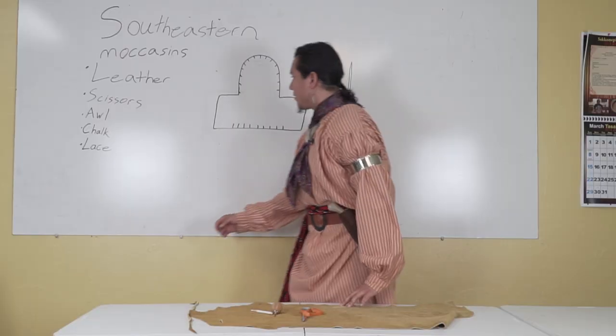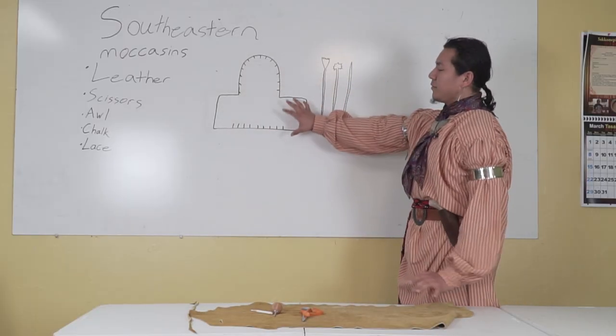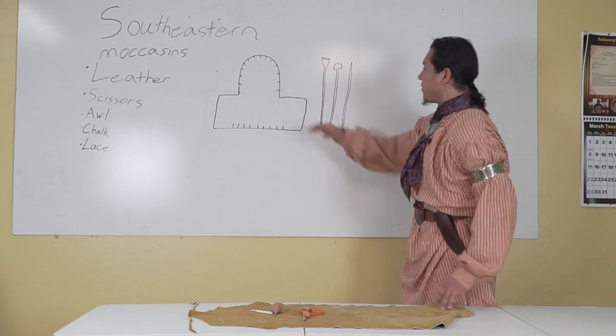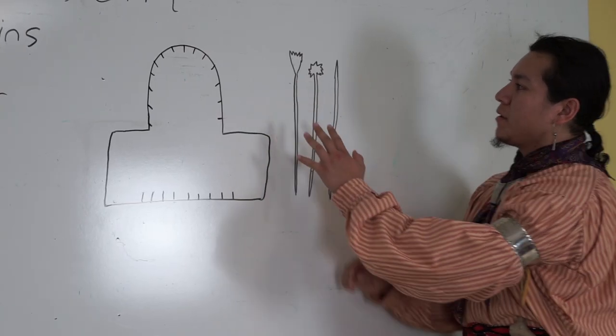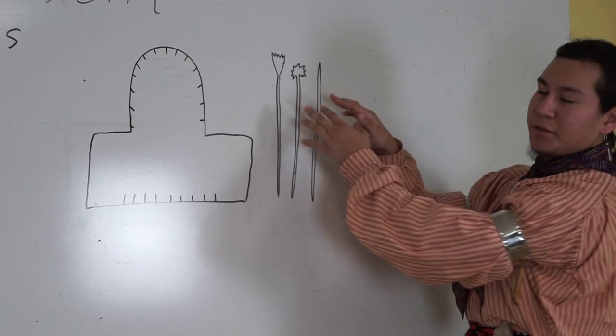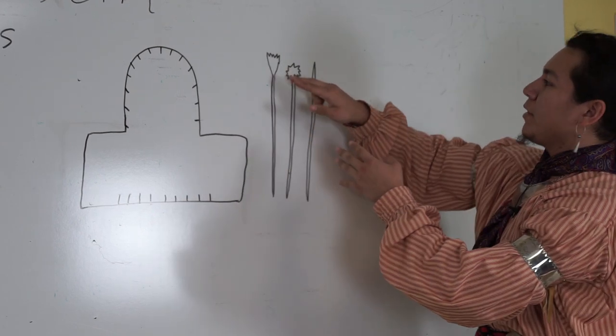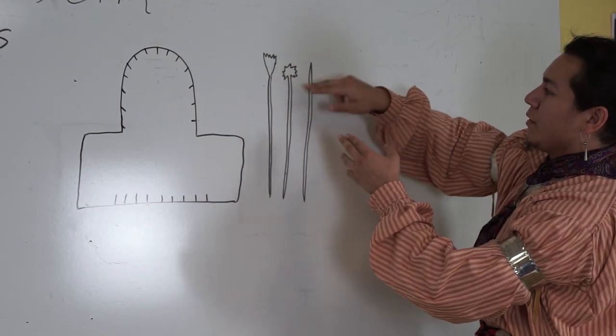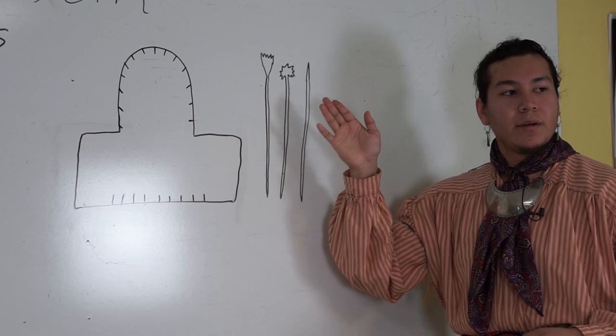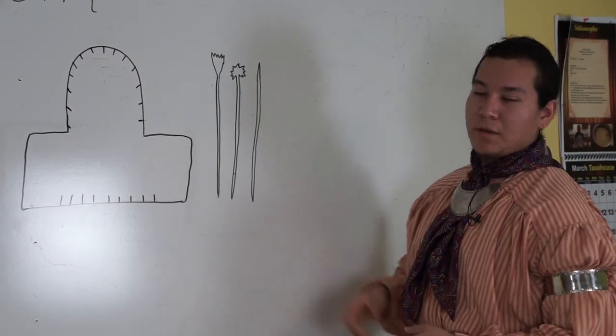So before we get started, here's the patterns that your moccasins are going to come out as. And for your lace, these are distinctive Seminole characteristics. With the triangle with the sawtooth and the round with the sawtooth, or you can leave it plain and decide into a knot, into a straight edge.